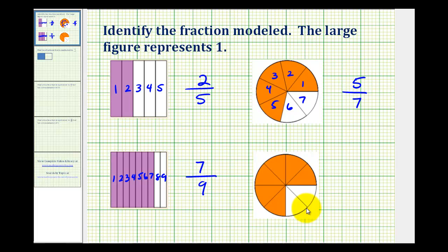And then for the last example, we'll take a look at this two ways. First, notice that this is divided into eight equal pieces. So our denominator would be eight, and there are six pieces shaded. So six-eighths would be one way to represent this fraction model.